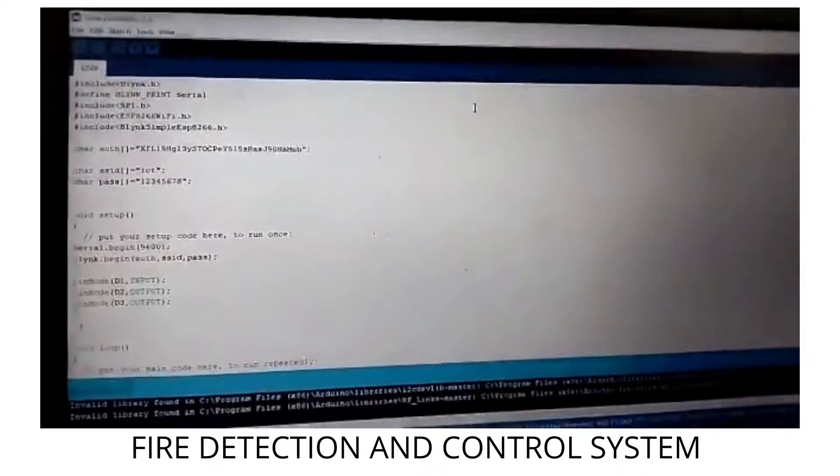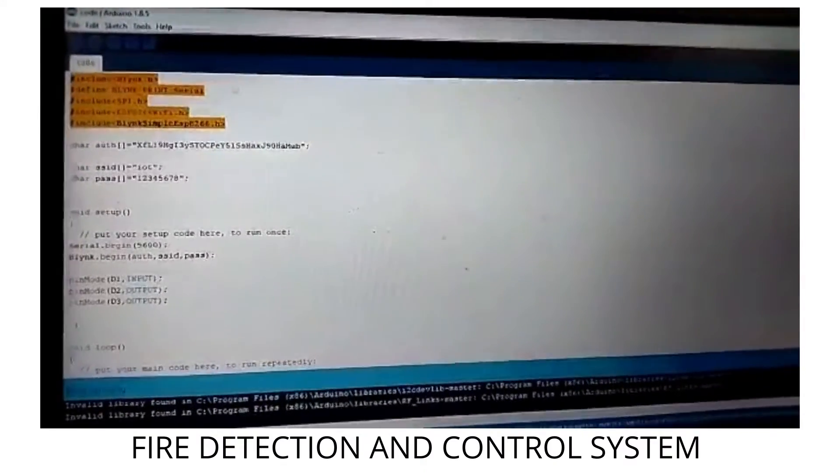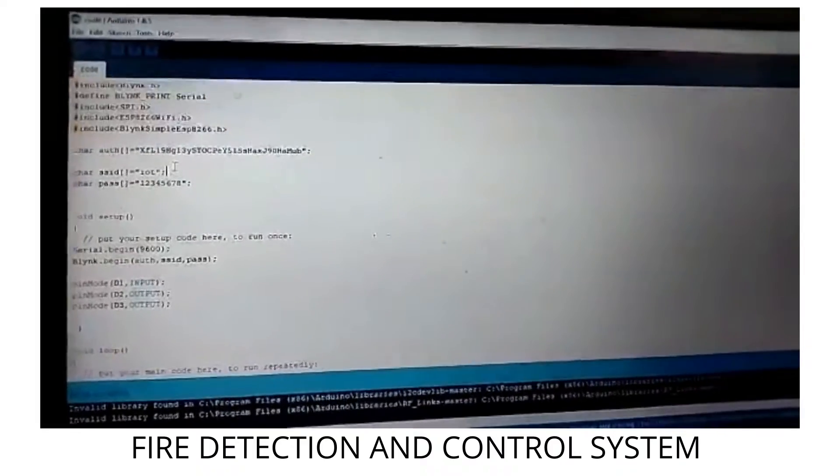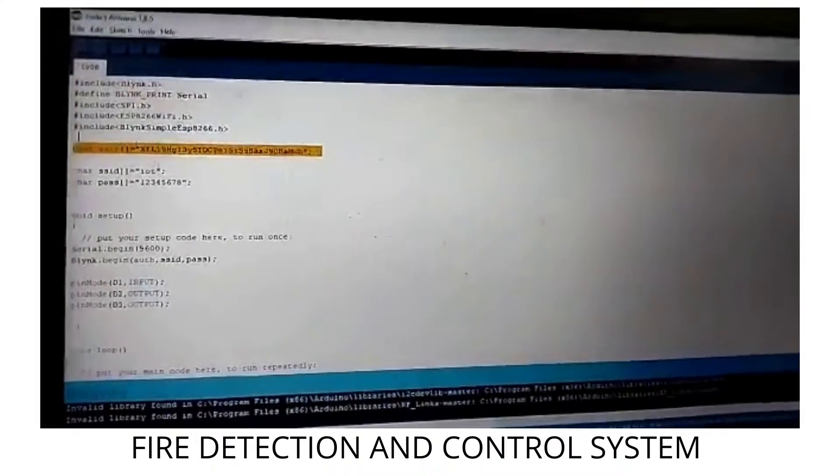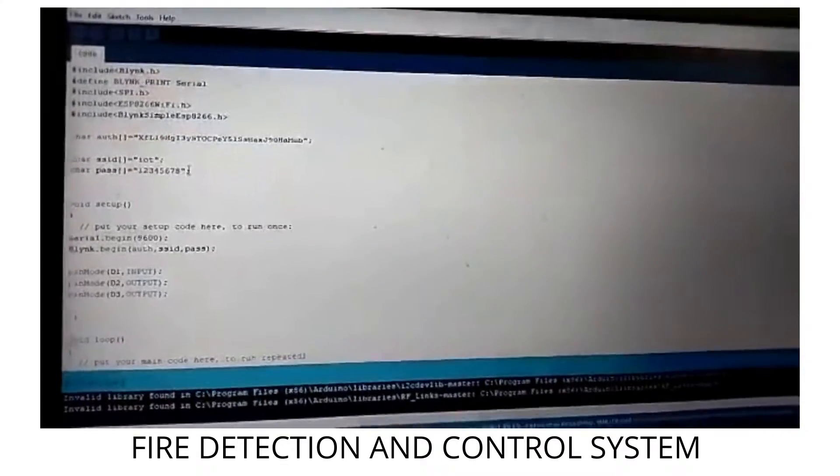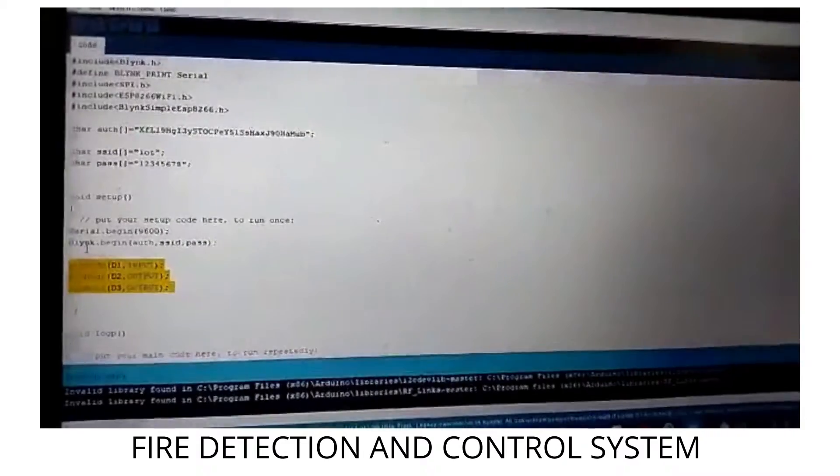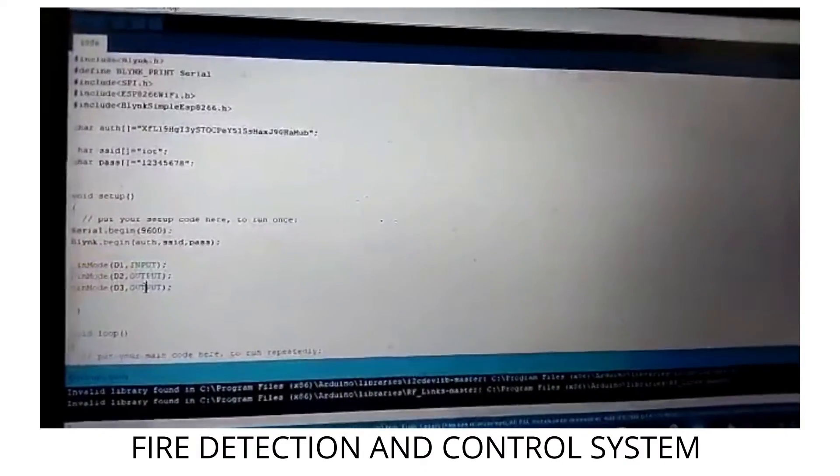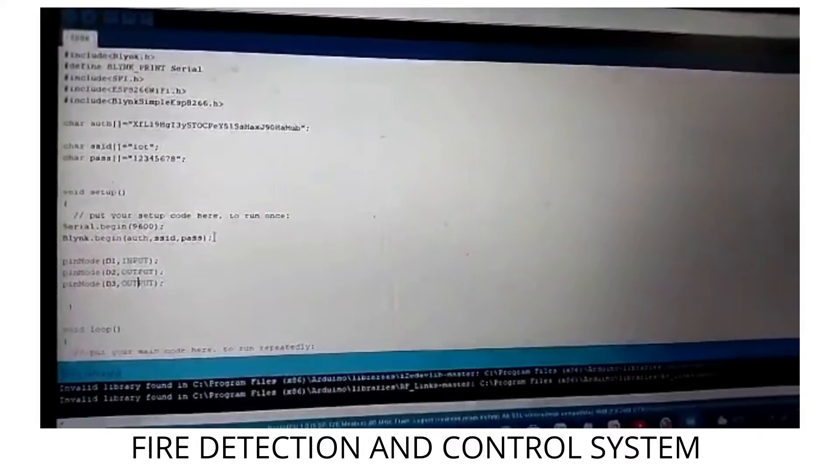From here it's a link to supported libraries. This is a token which you can access securely. Hotspot credentials, IoT and password, the setup. We have to give the input and output pins here. One is D1 for inputs and D2 and D3 for fan and LEDs, and the Blynk authentication we have to give here.